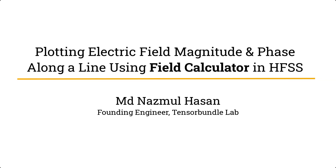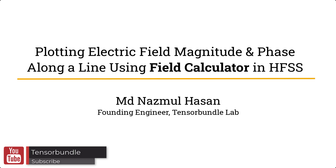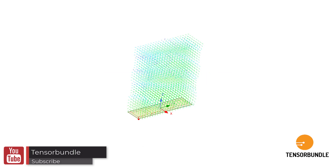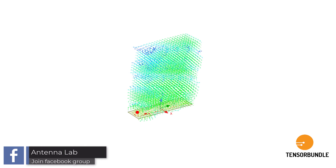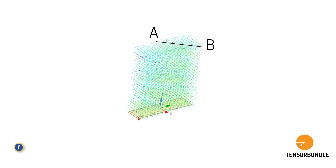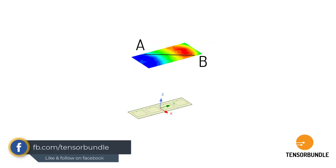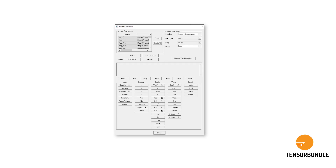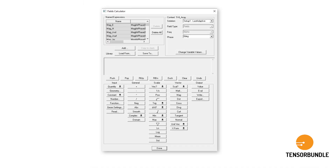Hi everyone, I'm Imdun Azumar Hassan. In this HFSS tutorial I'm going to show you how you can find out the electric field along a particular path. Sometimes we have a radiating structure like an antenna or antenna array which radiates electromagnetic field, and if you're interested to find out the magnitude and the phase of this electric field around any antenna, then this video will help you to determine it in HFSS. HFSS has a calculator that allows you to enter expressions for the magnitude and phase of the electric field along any particular predefined path. So let's dig in.